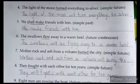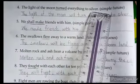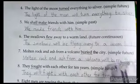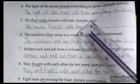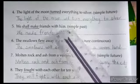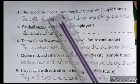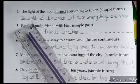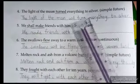Page 32, sentence 4: 'The light of the moon turned everything to silver' — change to simple future. In simple future, 'will' or 'shall' is used as the helping verb, and the verb is in first form. 'Turned' is second form, so we use 'turn' in first form. The sentence becomes: 'The light of the moon will turn everything to silver.'